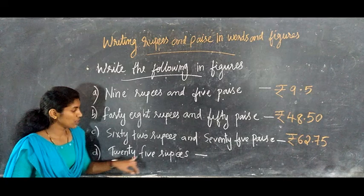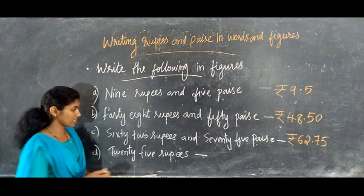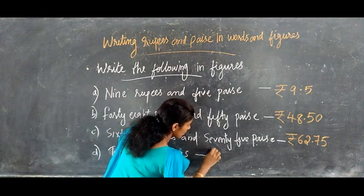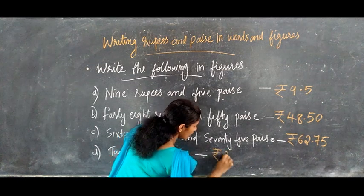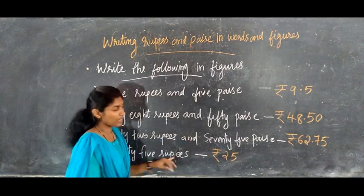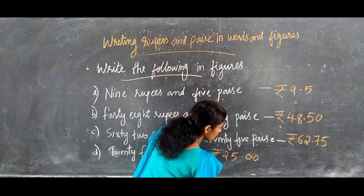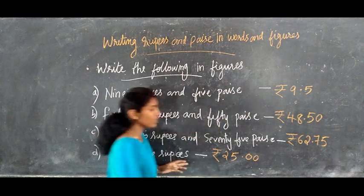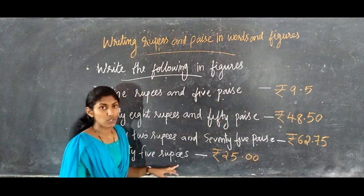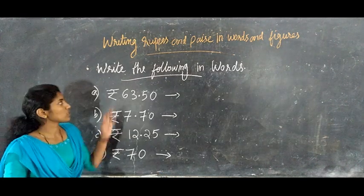Then D: 25 rupees — write the rupee symbol, then 25. Here we have no paisa, so we put 0 instead of paisa, giving ₹25.00. Since there is no paisa, we place zero.